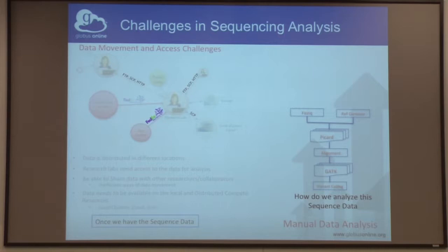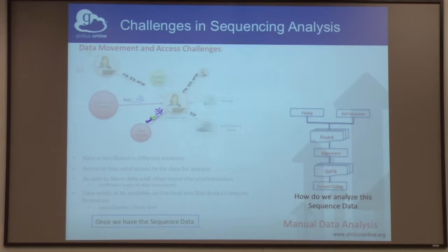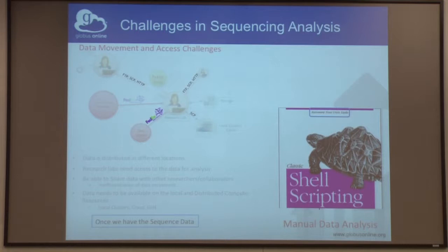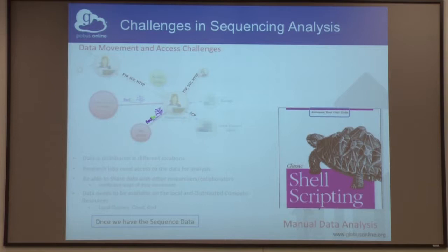Once the data is there, the next part of the problem is: how do I analyze this data? I took the example of a variant calling pipeline because Carl and others talked about variant analysis — this is a pipeline that next-gen sequencing analysis people would recognize very quickly. People typically resort to using shell scripting to do the analysis, which is not necessarily a bad idea. But if you're a bioinformatician, or a biologist who got a PhD to do research in cancer and other important problems, this stuff will make you want to become an IT person — you have to become a really sophisticated programmer or hacker in order to do your science. A lot of biologists have become programmers because they have to.